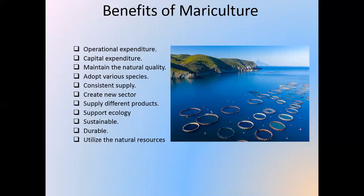Benefits of mariculture. Operational expenditure — efficient, economical, and fast growth process that provides significantly low operational cost compared to other methods of fish farming. Capital expenditure — significantly low setup investment while taking into account the growing capacity compared to other methods of fish farming. Maintain natural quality — a healthy and tastier product with higher nutritional balance and better quality which may be offered at a premium price. Adaptability to different species due to capabilities like size, modularity, versatility, survivability, and open sea environment. It creates a new sector, provides consistent supply, supplies different products, supports ecology, is sustainable, durable, and utilizes natural resources.